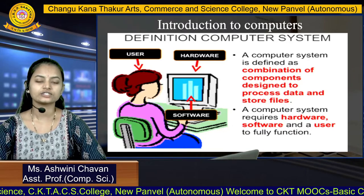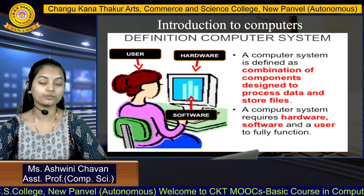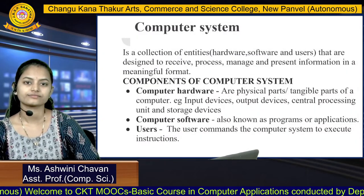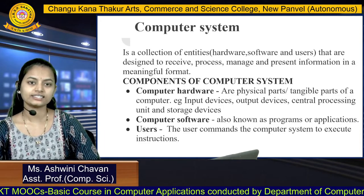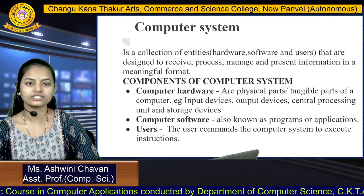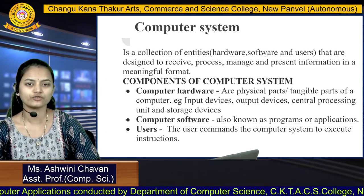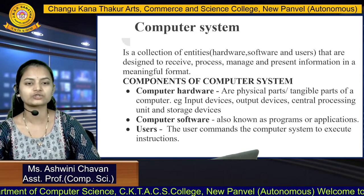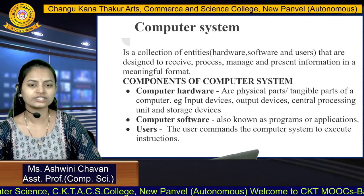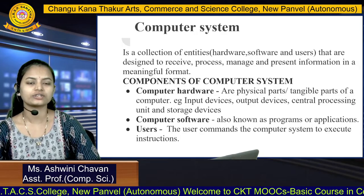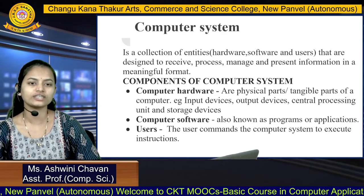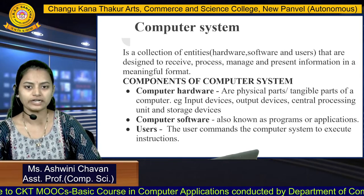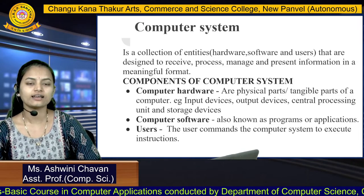There are three main components in our computer system. In the figure you can see there is a user, there is software, and there is hardware. These are the main three components of the computer system, without which the computer system cannot be fully functional. This computer system is a collection of entities — hardware, software, and users — that are designed to receive, process, manage, and present information in a meaningful format.